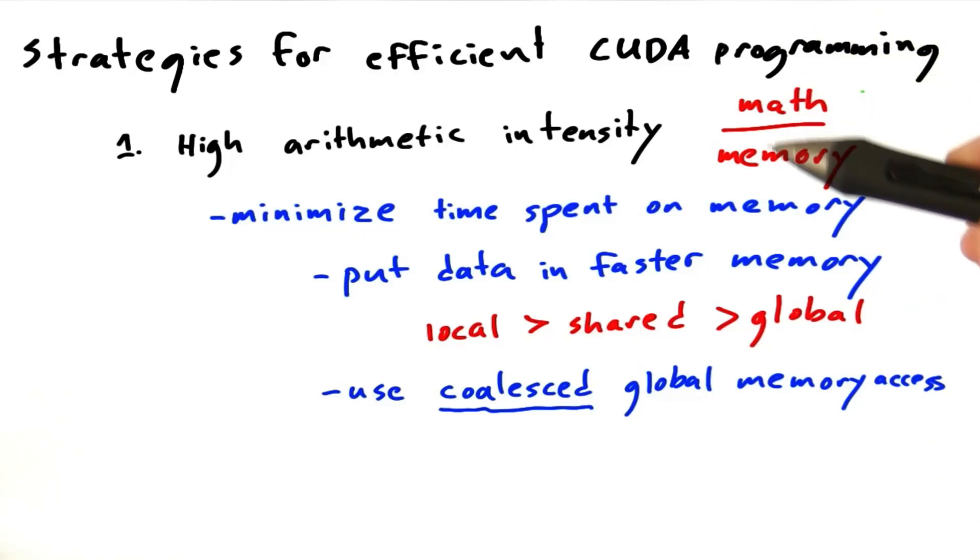Okay, let's recap where we are. We're talking about strategies to do efficient CUDA programming, and the first thing we've talked about is using high arithmetic intensity, trying to get your ratio of math operations to memory, time spent accessing memory, as high as possible. So far we've been talking about the denominator. The goal has been to minimize the time spent on memory.